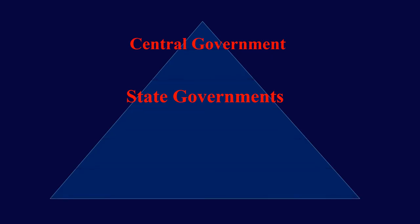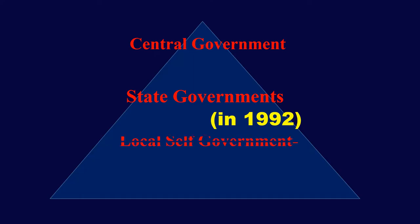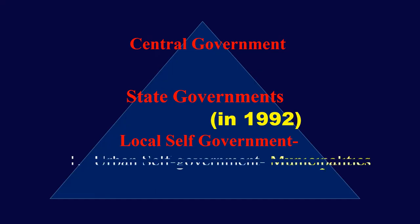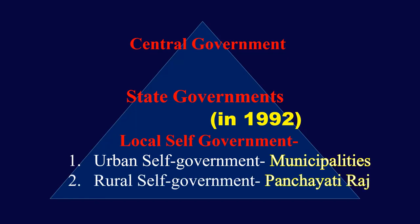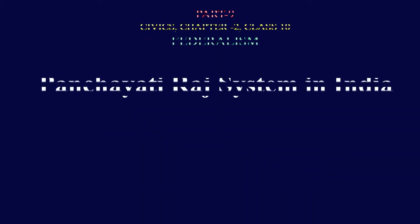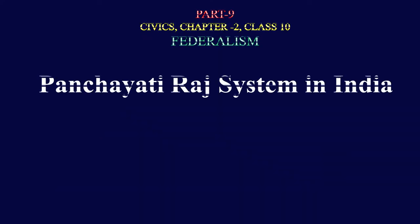Hello everyone, welcome. In our last video lecture we read that in 1992 the Constitution of India was amended to make the third tier of government local self-government. This local self-government is classified into two categories: urban self-government, that is municipalities, and rural self-government, that is panchayats. So in this video the topic will be the panchayat system in India.